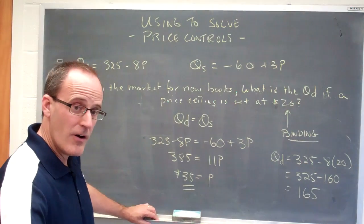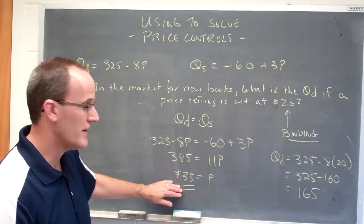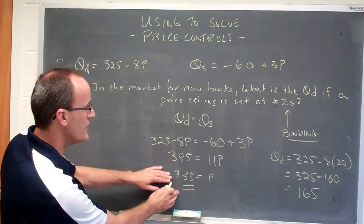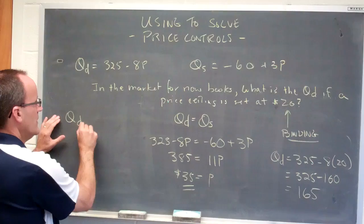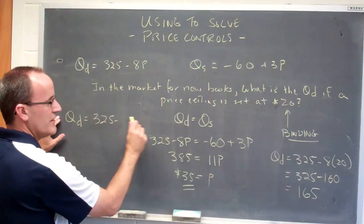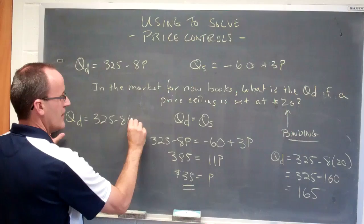What would consumers have bought if the market was not subject to a price ceiling? Well, then we could just come back over here to figure this out. So if I were to plug in to QD, 325 minus 8 times 35.